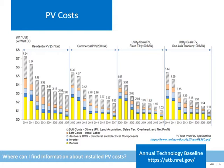Another important driver of PV project potential is the cost of the technology itself. It's important to consider the total installed cost, which includes not only the PV module, but also the inverter and other hardware components, as well as soft costs such as labor, taxes, and overhead. This chart shows the total cost declines in residential, commercial, and utility-scale PV costs over the past eight years. In general, larger systems are cheaper on a per-kilowatt basis. These are US average costs, but PV costs can also vary by geographic location and installer.